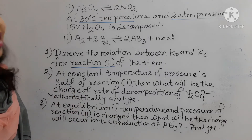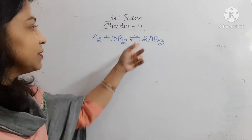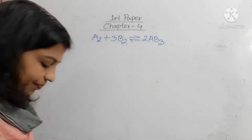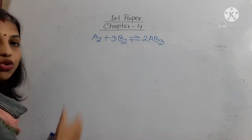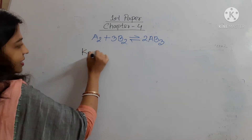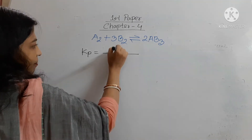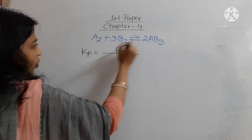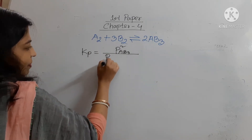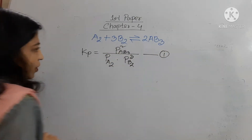Let us start these three questions. Our first question is: derive the relation between Kp and Kc for reaction A2 + 3B2 = 2AB3. For this reaction, Kp is the partial pressure of the product — that means P of AB3 squared — divided by the pressure of the reactants: P of A2 into P of B2 whole cube. This is equation number 1.